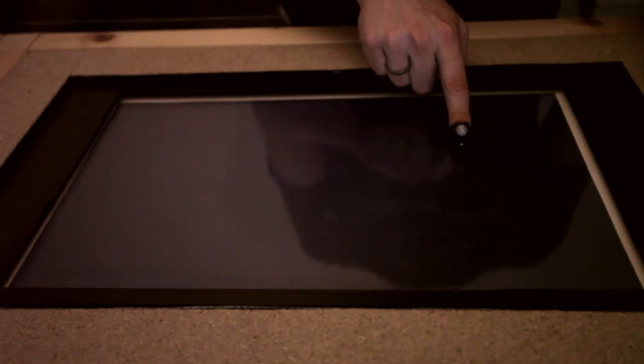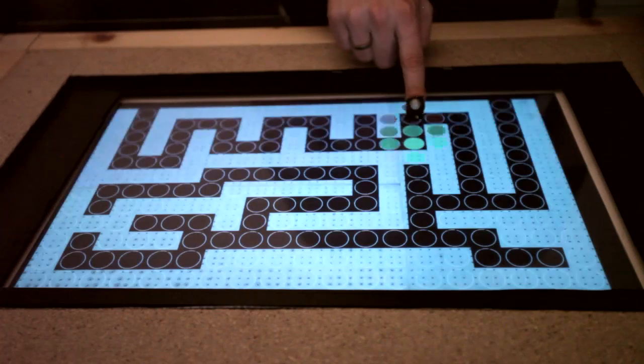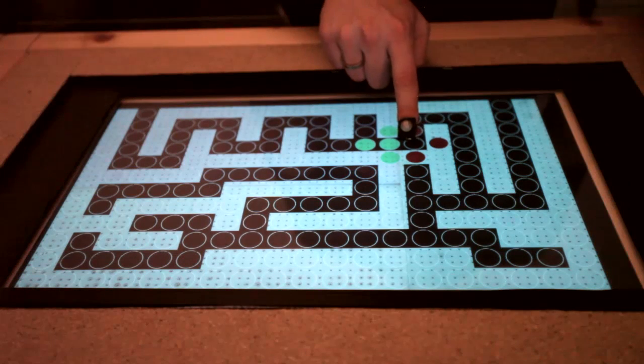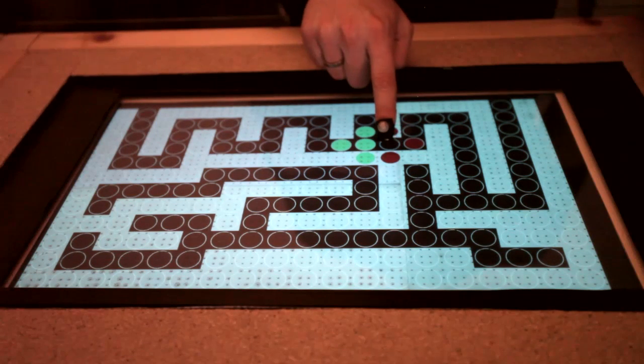Unlike most haptic feedback techniques, Finger Flux can create directed feedback. It can pull your finger where you should be going, even when you're not looking. This example shows how your finger could be guided through a maze. By attracting your finger in the right direction, while pushing it away from other directions, the system lets you feel where your finger has to go next.